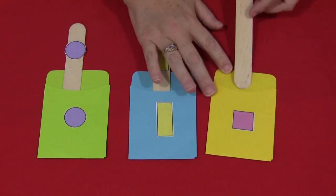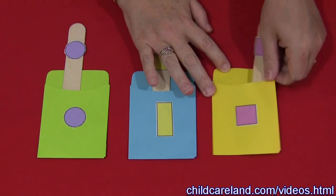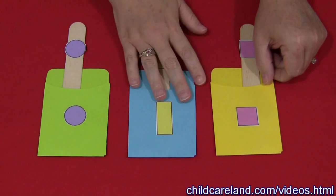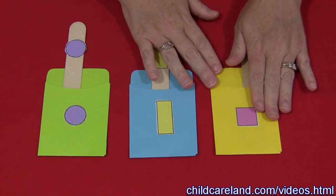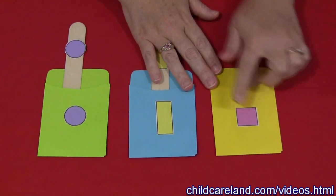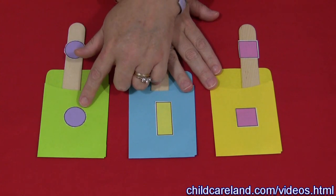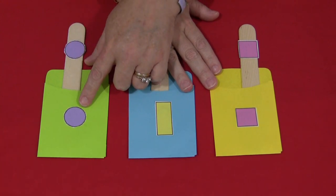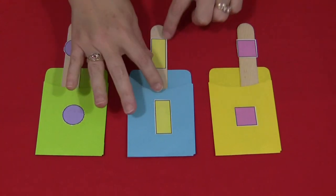These patterns can be found on my website at ChildCareLand.com underneath the video section and you would print them out on card stock paper and put one on each front of each library pocket and a matching one on a craft stick.